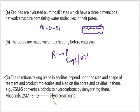So for example, if we want to make hydrocarbons from alcohol, if we want to make hydrocarbons from alcohol, then we have to use ZSM-5. So we can say that.